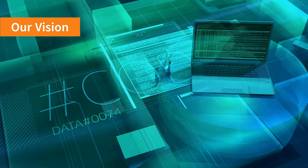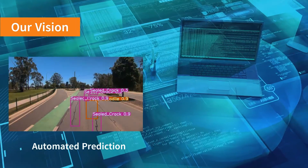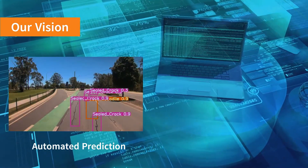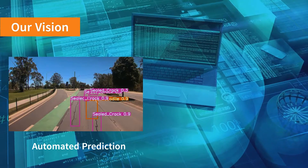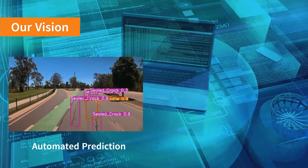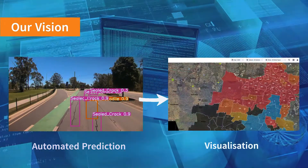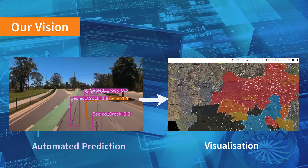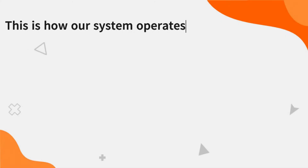In this project, our vision is to deliver an automated AI-powered method for producing accurate predictions in identifying road defects, as well as a visualisation of the results on an interactive dashboard. This is how our system operates.